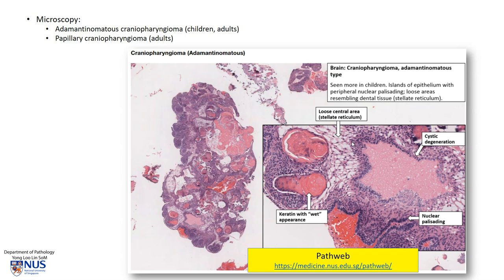This is an example of an adamantinomatous craniopharyngioma. On imaging, there may be cystic areas or areas of calcification. What we see here are islands of squamous epithelium with peripheral nuclear palisading, meaning the nuclei at the edge form a row of very nicely lined up nuclei. There is also often a loose area where the cells form a spongy network, and this is called stellate reticulum. In addition, there are areas of anucleate keratinized cells, and these compacted cells are known as wet keratin. So this tumor often has areas of cystic change.